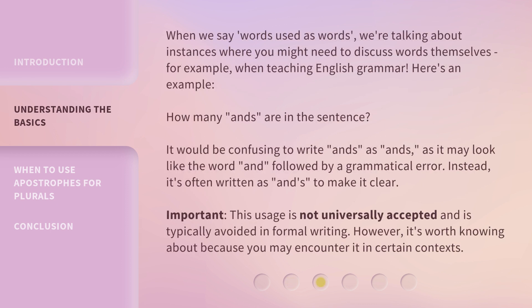When we say 'words used as words,' we're talking about instances where you might need to discuss words themselves — for example, when teaching English grammar. Here's an example: How many 'and's are in the sentence? It would be confusing to write 'ands' as is, as it may look like the word 'and' followed by a grammatical error. Instead, it's often written as 'and's' to make it clear. Important: this usage is not universally accepted and is typically avoided in formal writing. However, it's worth knowing about because you may encounter it in certain contexts.